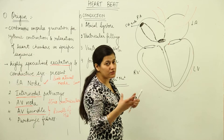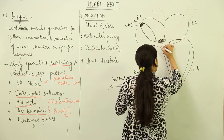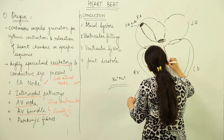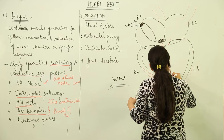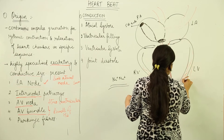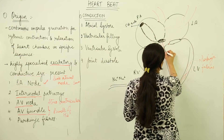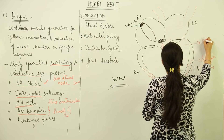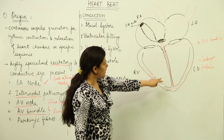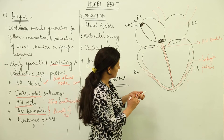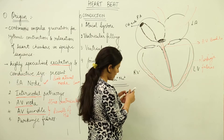The AV node has excitatory cells which receive the signal from the SA node. From the AV node, two AV bundles arise and move towards the ventricles. Because the ventricular musculature is quite thick and dense, the bundles break up into Purkinje fibers present in the ventricular walls. The AV bundle travels through the interventricular septum, which separates the right and left ventricles.